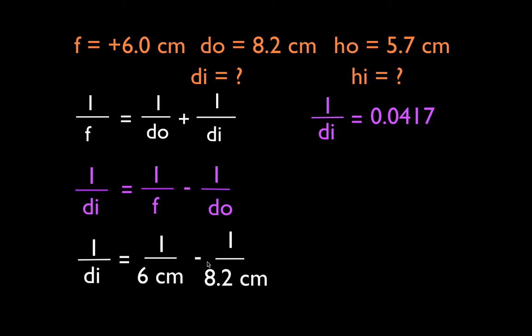1 over the dI is equal to 0.0417. That's not the dI. That is 1 over the dI. In order to get the dI, I can take the reciprocal of both sides. I get that the dI is equal to 1 over 0.0417. I just have to say 1 divided by 0.0417 will give my dI. My dI is 23.98. I remember I want it to be more than 12. And that is more than 12. So I feel good about that.